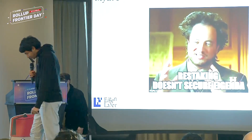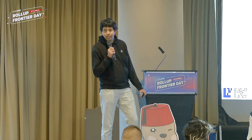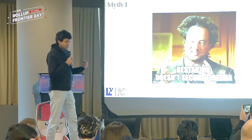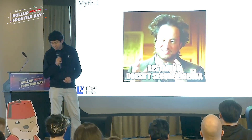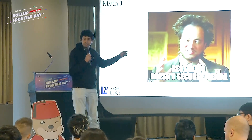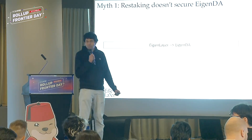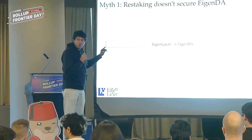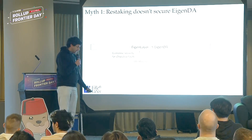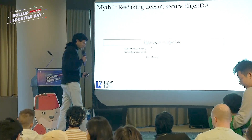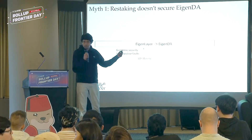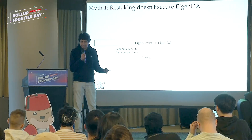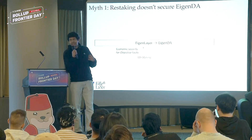The first myth is: restaking doesn't secure EigenDA. EigenDA is a product built on Eigenlayer, which is a restaking protocol where you stake ETH and stakers and operators opt in to serve new services. Some people are saying that restaking doesn't really secure EigenDA. I want to explain the trust model of EigenDA. Number one is economic security — you stake a bunch of ETH and claim you will validate services correctly. If you don't, your ETH will get slashed. So for objectively attributable faults, ETH staking provides economic security.